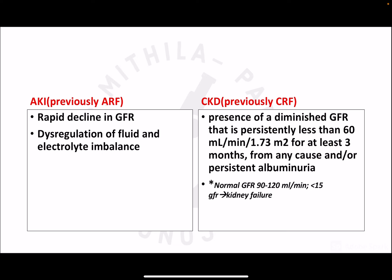Acute kidney injury — previously called acute renal failure — is characterized by a rapid decline in glomerular filtration rate and acid-base imbalance. Chronic kidney disease is defined as persistently decreased GFR of less than 60 mL/min/1.73 m² for at least three months, due to any cause affecting the kidney, or by persistent albuminuria.